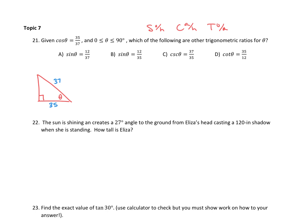So Pythagorean theorem: a squared plus b squared equals c squared. You want to make sure that your hypotenuse — that 37 — is your side c. So we can say a squared plus 35 squared equals 37 squared. When you solve for a, you get a equals 12. You square both sides, subtract, a squared equals 144, then square root both sides.